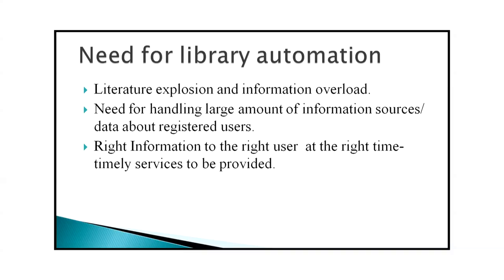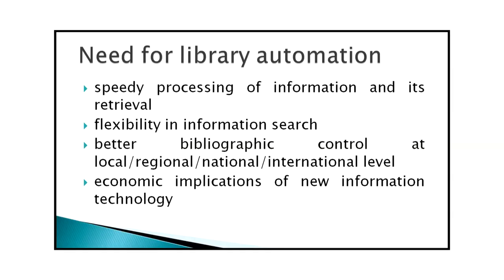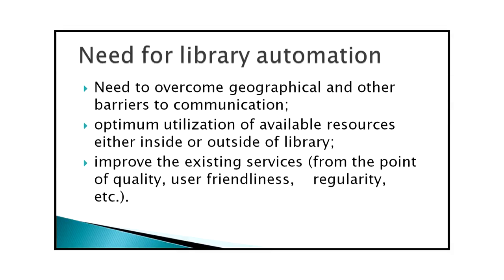Why do we need library automation? There are various reasons: literature explosion and information overload, the need for handling large amounts of information sources, data about registered users, and ensuring the right information is provided to the right user at the right time. Other reasons include speedy processing and retrieval of information, flexibility in information search, better bibliographic control at local, regional, national and international level, and economic implications of new information technology.